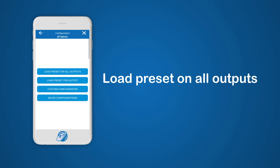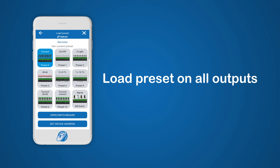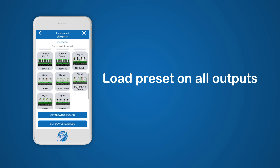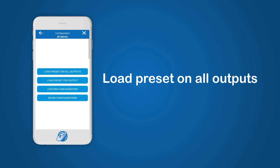The Load Preset on All Outputs option is used to select a preset and load it on all outputs. This means that all outputs will be configured exactly the same way based on the preset selected. Within the Load Preset on All Outputs section you can also set the start address of the device and open the switchboard. If you want to learn more about the different presets, please visit the preset information through the link in the video description.